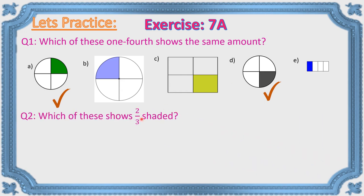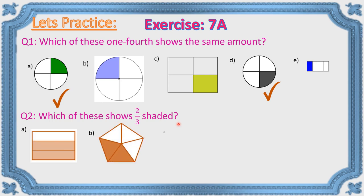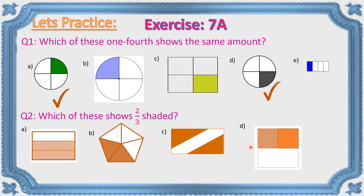Next question: Which of these shows two-thirds shaded? Checking the options — in one picture the pieces are not equally divided, so we cannot make a fraction. In another, three pieces are not the same size. In another, the pieces are equal but it shows two-fifths, not two-thirds. The last option has two pieces shaded out of three equal parts — so that is two-thirds.